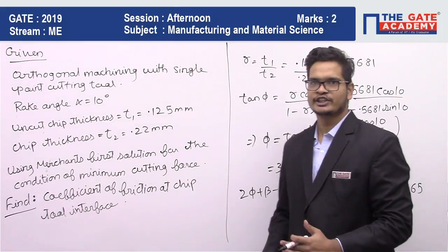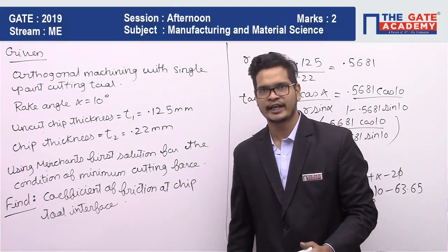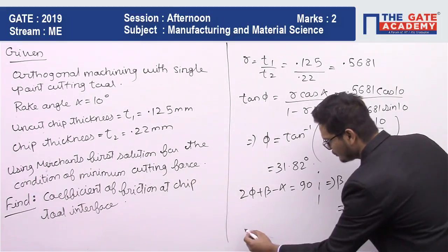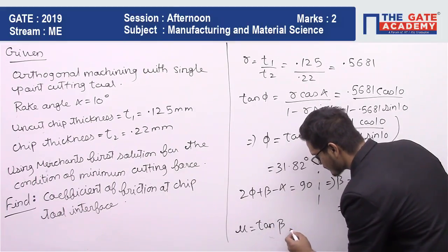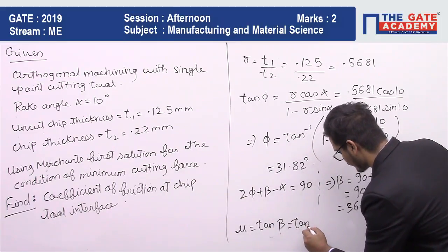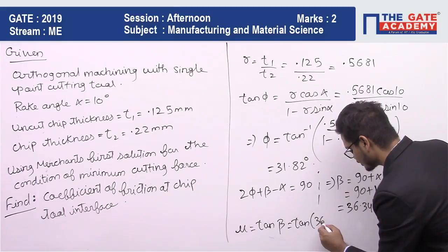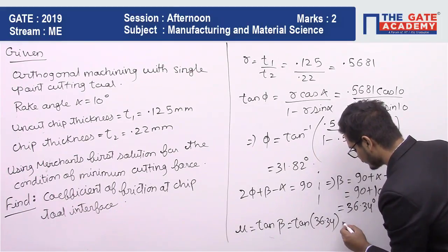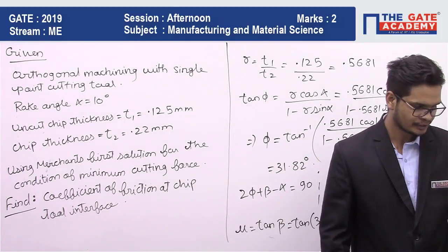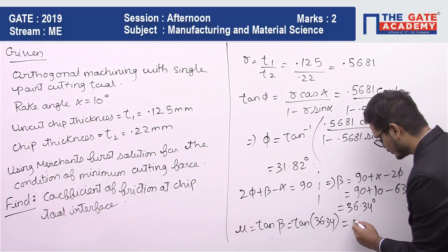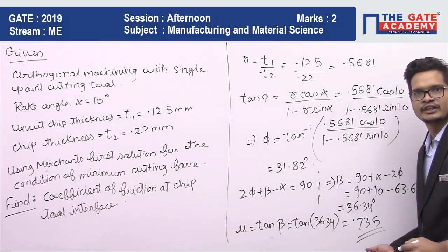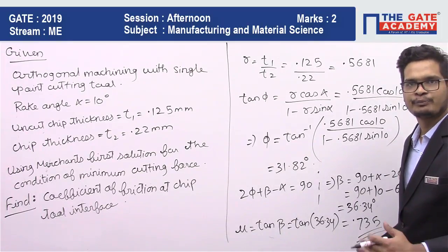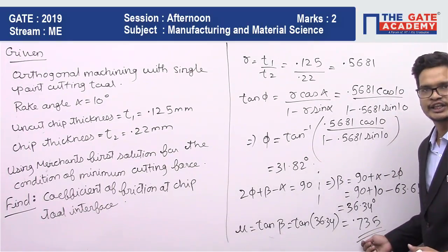Now coefficient of friction is nothing but tan of friction angle. So tan of beta, μ is equal to tan of beta. Tan of 36.34. This comes out to be 0.735. So this is the final answer. The coefficient of friction between chip tool interface is 0.735.